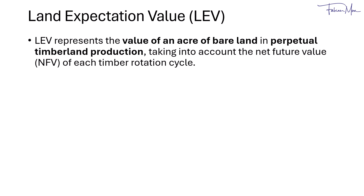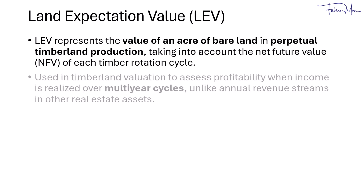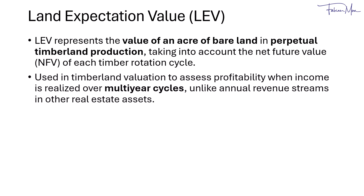The land expectation value, or LEV, represents the value of an acre of bare land used for perpetual timber production. It captures the long-term potential of the land, considering the net future value, or NFV, of each timber rotation cycle. In simpler terms, it's the value of the land when its primary use is for timber production. Unlike most real estate investments which generate income annually, timberland produces returns over several years. LEV helps us evaluate the profitability of these multi-year cycles in a systematic way.